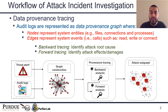Attack investigation usually gets triggered with a threat alert that reflects a malicious event or an attack symptom. For example, a threat alert can be reported by an antivirus system. The attack investigation is typically performed on the audit logs since it includes the history of system events. Many state-of-the-art works rely on parsing the audit logs to construct data provenance graphs, where system entities such as files or connections are represented as nodes, and system events such as file system reads and writes are represented as edges.